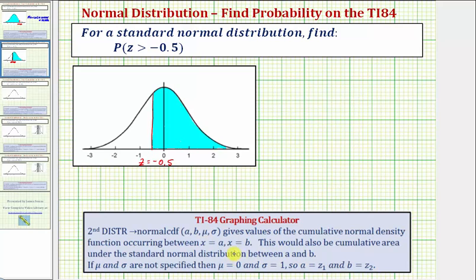However, if we set mu equal to zero and sigma equal to one, then a and b would be the lower and upper bound z-scores, which is what we'll do to find our probability.